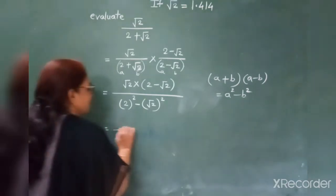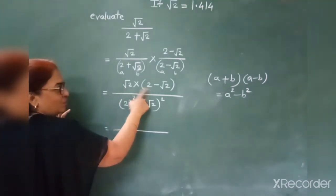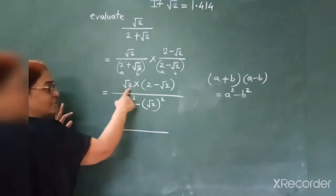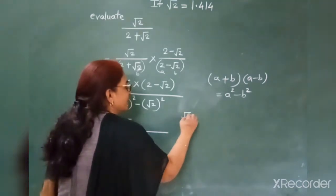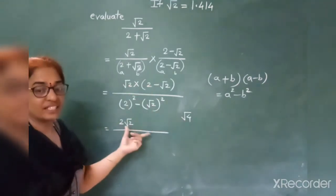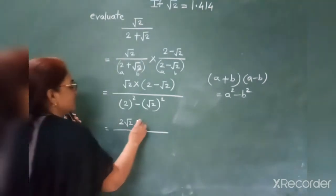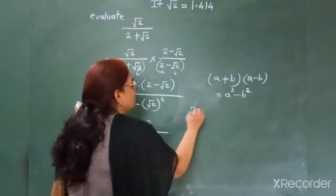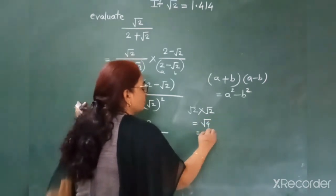So the numerator becomes: root 2 into 2. Root 2 into 2 — 2 is a rational number. Root 2 is an irrational number; its multiplication gives 2·root 2, not root 4. So we have minus root 2 into root 2, which becomes 2. Root 2 into root 2 means root 4, and root 4 equals 2.